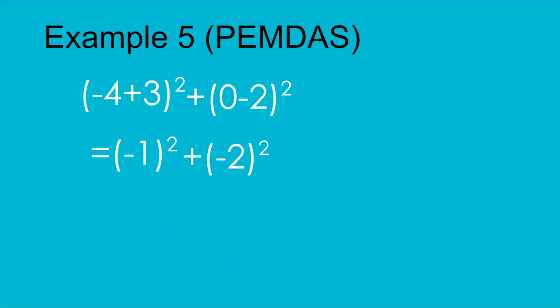Here is another example with two parentheses and exponents. We deal with each parenthesis separately: −4 + 3 = −1, keep the square; and −2 squared. Then do the exponents: (−1)² = −1 × −1 = 1, and (−2)² = −2 × −2 = 4. So 4 + 1 = 5.